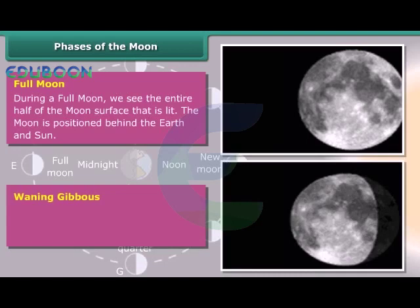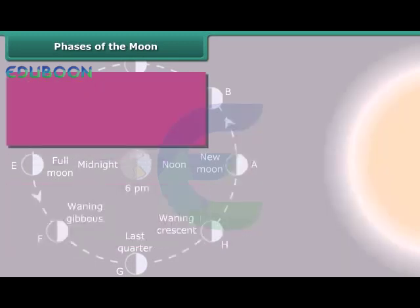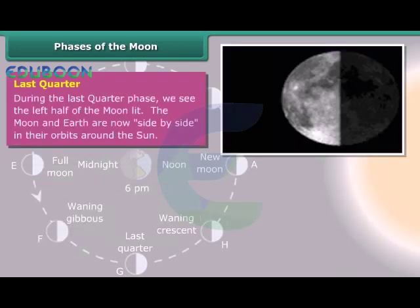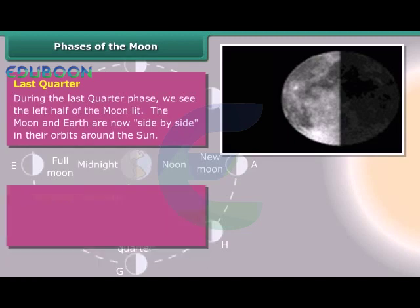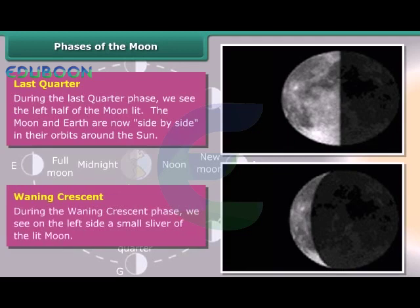Waning Gibbous: During the waning gibbous phase, we see almost the entire left side of the lit Moon. Last Quarter: During the last quarter phase, we see the left half of the Moon lit. The Moon and Earth are now side by side in their orbits around the Sun. Waning Crescent: During the waning crescent phase, we see on the left side a small sliver of the lit Moon.